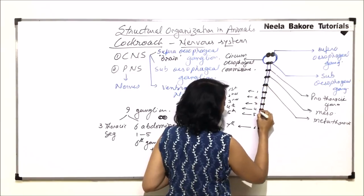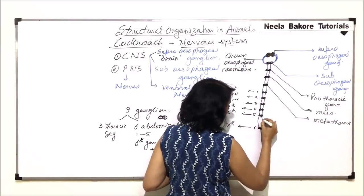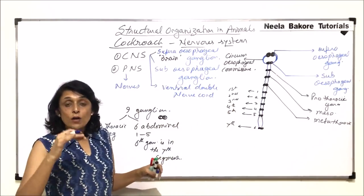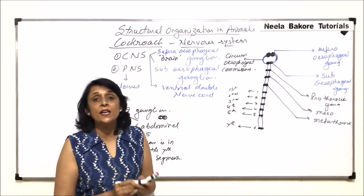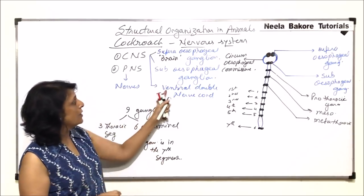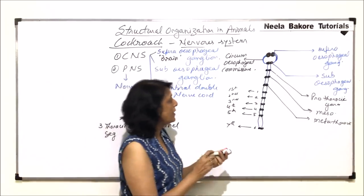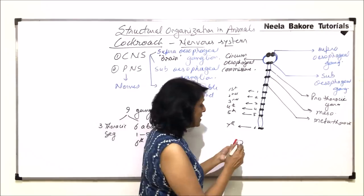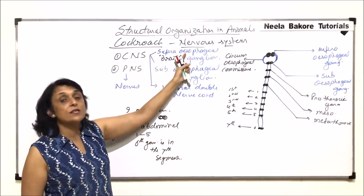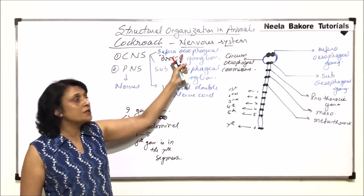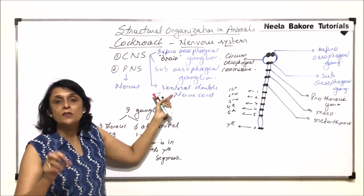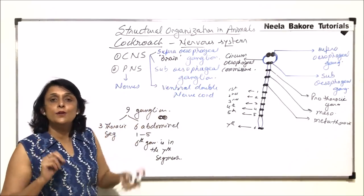If you remember, we discussed those sinuses, and the lowermost sinus was called the perineural sinus because it surrounds the ventral double nerve cord. This is how the central nervous system is arranged: there is a supraesophageal ganglion, a subesophageal ganglion, and a ventral double nerve cord.